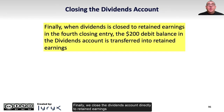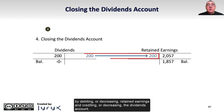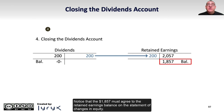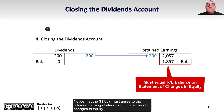Finally, we close the dividends account directly to retained earnings by debiting or decreasing retained earnings and crediting or decreasing the dividends account. The dividends account is left with a zero balance, and retained earnings is left with a credit balance of $1,857. Notice that the $1,857 must agree to the retained earnings balance on the statement of changes in equity.